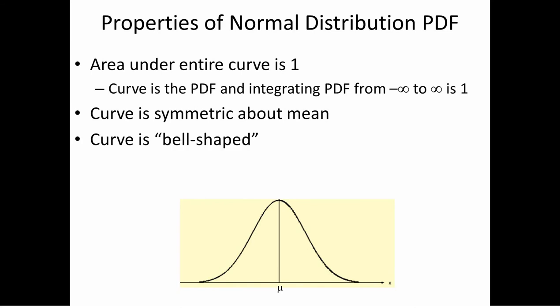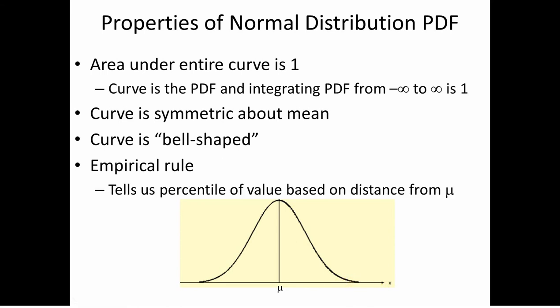The last property is that the curve is bell-shaped, and there's an important consequence of that called the empirical rule. The further you get from the mean, the less likely you are to be at that position. The PDF at a particular point is not equal to the probability, but the empirical rule tells us the percentile of a value — how likely that value is to occur based on its distance from the mean.